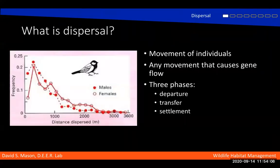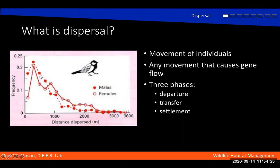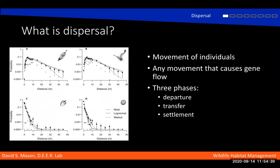Dispersal is the movement of individuals. It can also be defined as any movement that causes gene flow. It happens in three phases: departure, transfer, and settlement. There are some general patterns — we see with this bird species here that the farther you go away from the place of birth, the fewer individuals you have. Another way of saying that is more of them disperse less far away. This pattern is seen in many organisms, including plants.